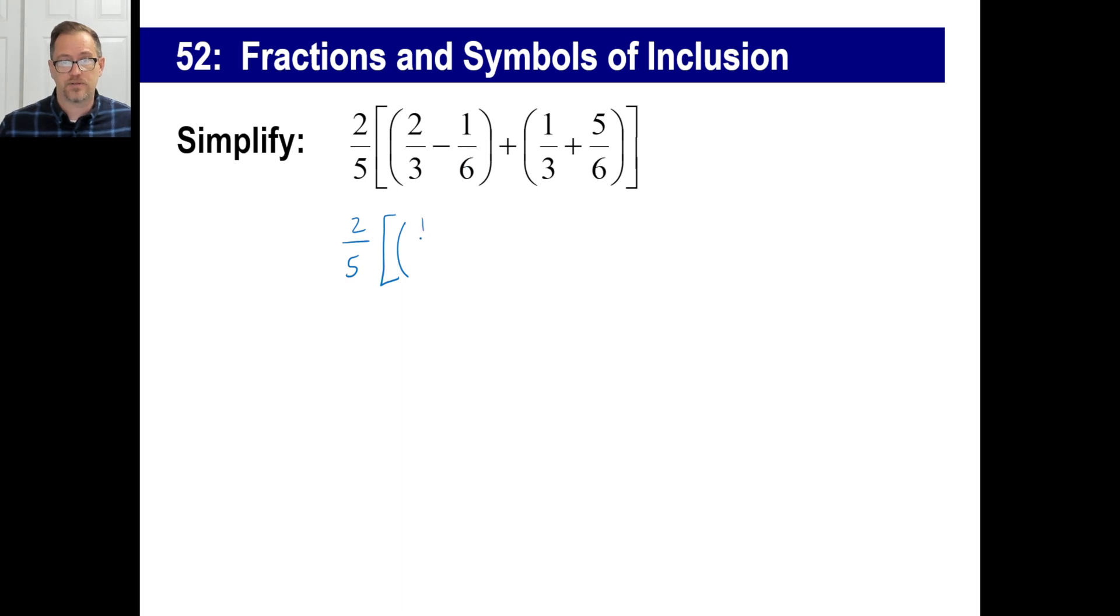Four-sixths minus one-sixths is three-sixths, right? Well, three-sixths is the same thing as a half, right? You can go right there. Okay, same thing over here. A third plus five-sixths, let's just make this into six, right? That'll be two-sixths plus five-sixths, that's seven-sixths.